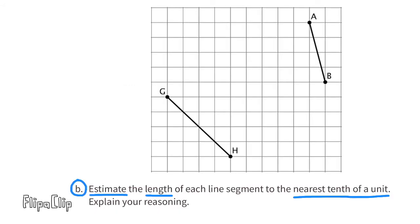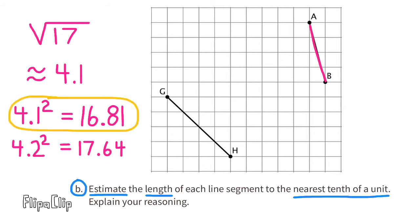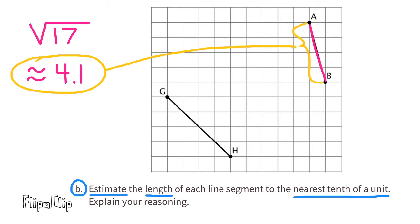Part b: estimate the length of each line segment to the nearest tenth of a unit. For line segment AB, we know the length is the square root of 17. My estimate is approximately 4.1 units, because 4.1 squared equals 16.81 and 4.2 squared equals 17.64. Since 16.81 is closer to 17, I selected 4.1 units as the estimated length to the nearest tenth.